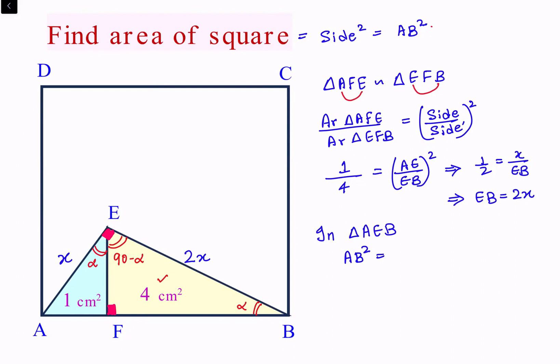But before we apply this, we can use the area of triangle AEB. Area of triangle is half of base times height. Area of triangle is 1 cm² plus 4 cm², so that is 5 cm². This is half of AE which is X and EB which is 2X. Solving, the 2s get cancelled and we get X² equals 5. Let's call this observation 1.